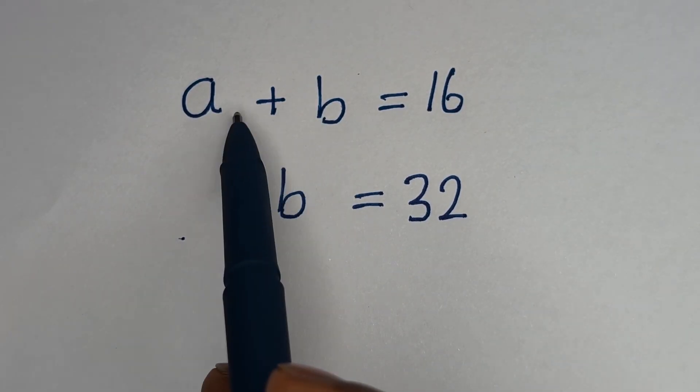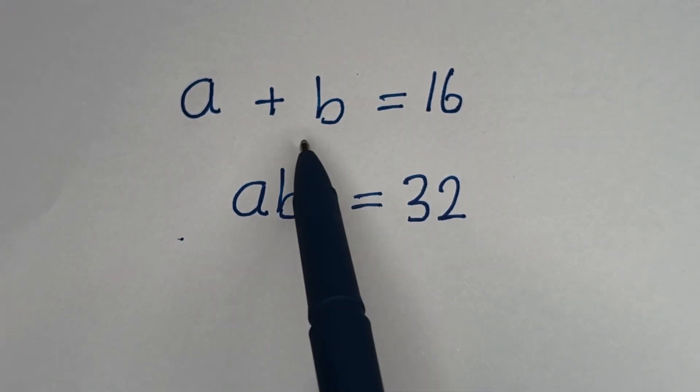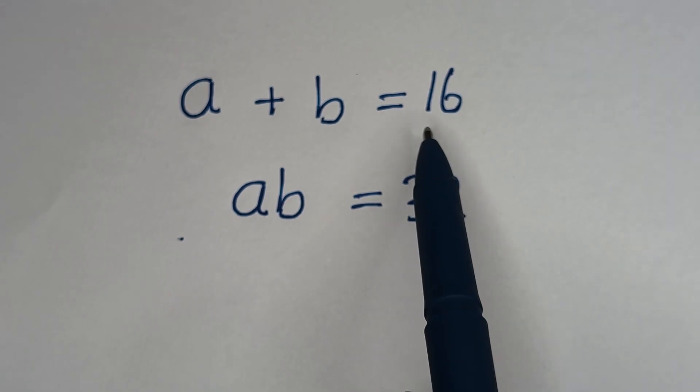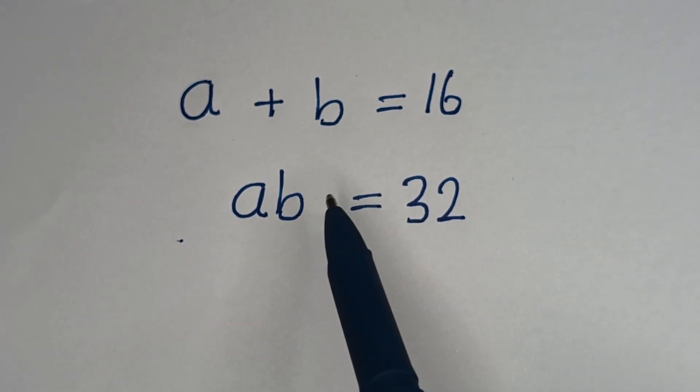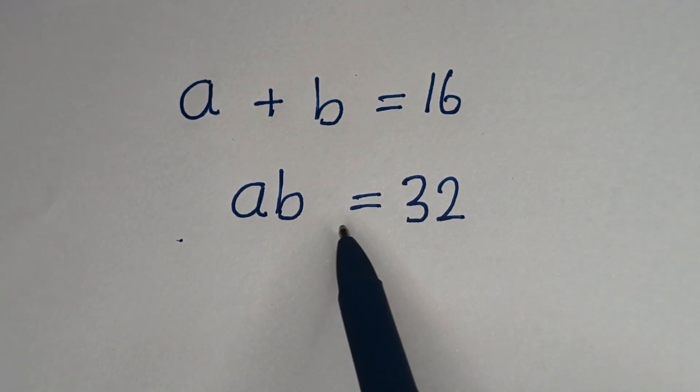Hello. How to solve for A and B in this equation? A plus B is equal to 16. AB is equal to 32.